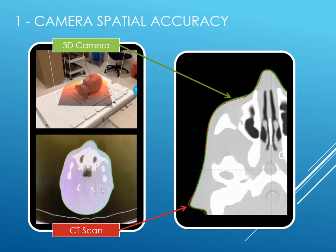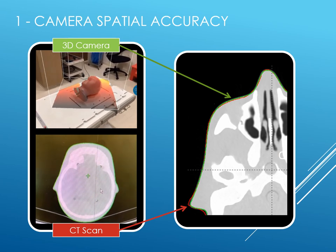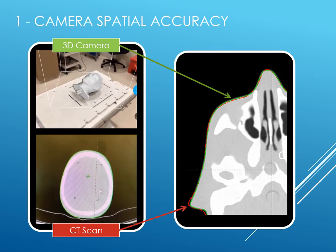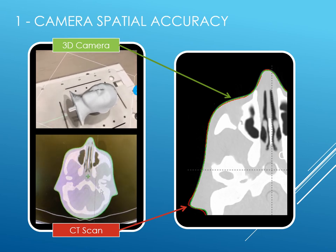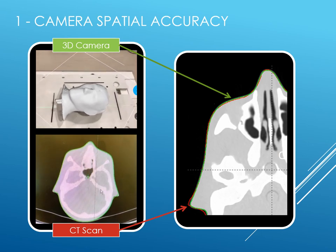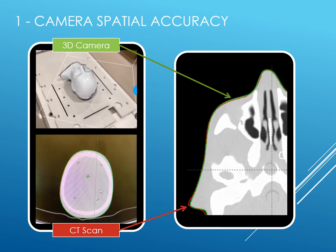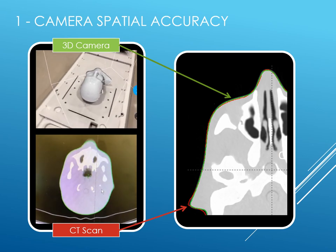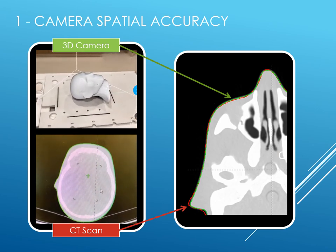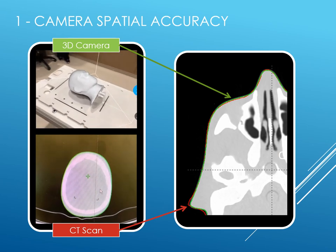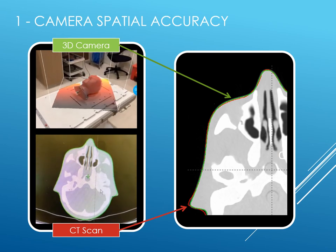First, to assess camera spatial accuracy in this clinical scenario, a CT scan of a head phantom was acquired and imported into our treatment planning system, and a body contour was automatically generated. Conversely, 3D camera scans were obtained of the same phantom, and the two surfaces were registered together using a least-square-sums algorithm. This method assumes that the body structure derived from the CT scan is the true reference.